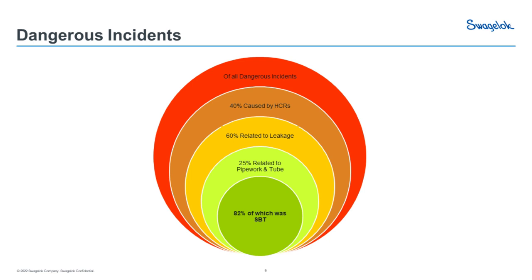60% of those incidents related to leakage — something that, in my opinion, is pretty inexcusable. Certainly at the levels we're talking here, there's good training out there now that shows people how to install this stuff correctly and mitigate most of these issues. 25% of that 60% are related to pipework and tube. Pretty easy to install stuff, but a huge percentage related to pipework and tube. And 82% of that was actually small bore tubing. Anyone can install a small bore tubing system to the point where it can be leak-tight within a couple of days' training. They're very simple components, but obviously something's going on in industry where people are having these incidences leading to leakage and a myriad of other problems.